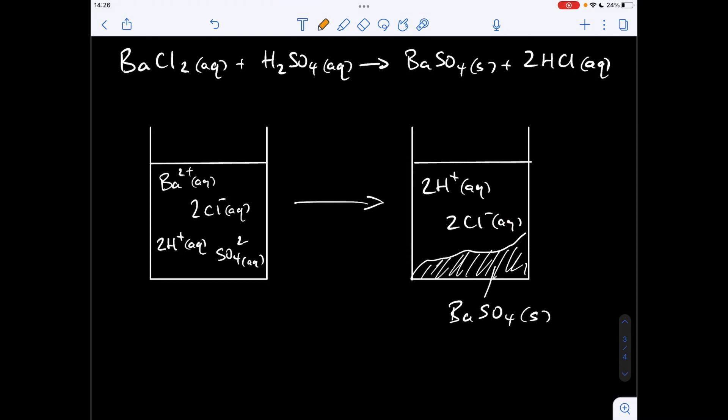So let's just cancel out the spectator ions. So we've got two chloride ions, spectating, and two H plus ions as well. So the ionic equation is going to be Ba two plus aqueous, plus SO4 two minus aqueous, going to BaSO4 solid.